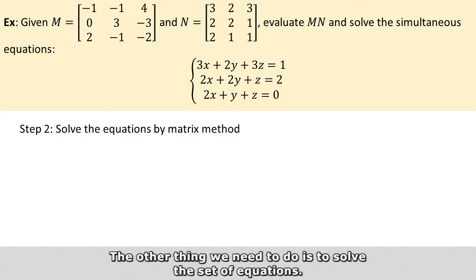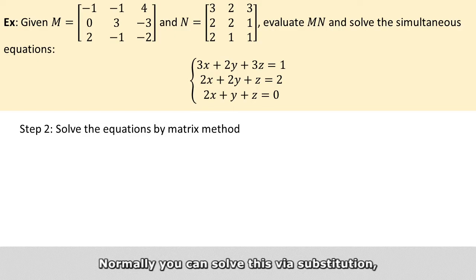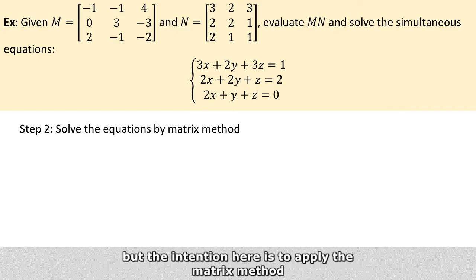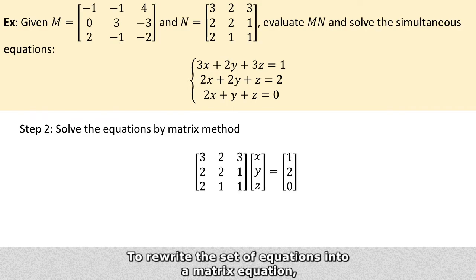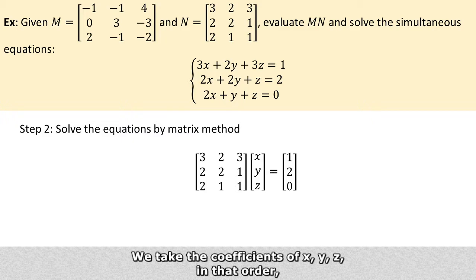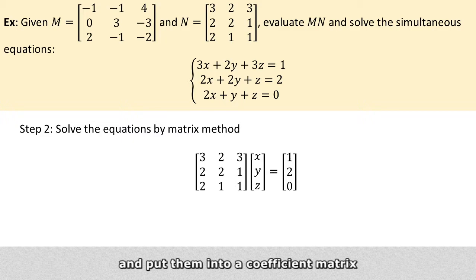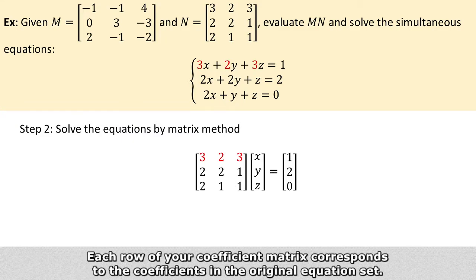The other thing we need to do is solve the set of equations. Normally you can solve this by substitution, but the intention here is to apply the matrix method, because we just did some matrix operations. To rewrite the set of equations into a matrix equation, we take the coefficients of x, y, z in that order and put them into a coefficient matrix. Each row of your coefficient matrix corresponds to the coefficients in the original equation set.